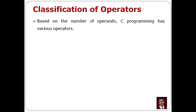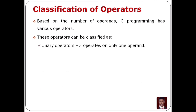The next topic is classification of operators. Based on the number of operands, C programming has various operators. The first type is unary operators. A unary operator operates on only one operand — if you perform an operation on a single operand, the operator is a unary operator.